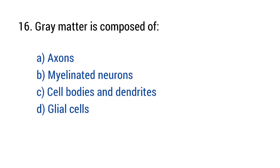Question number sixteen. Grey matter is composed of. The right answer is option C: Cell bodies and dendrites.